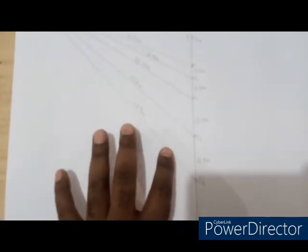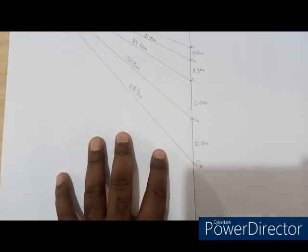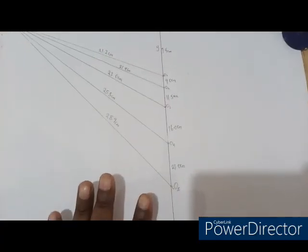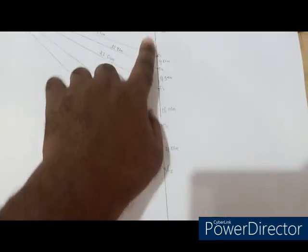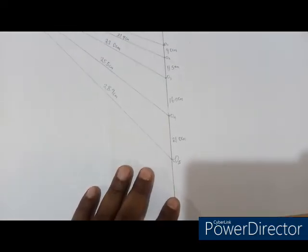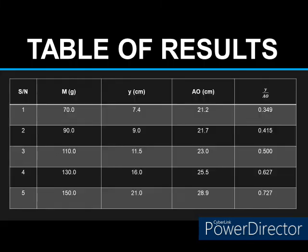Now I'm going to tabulate these readings in a table, and then I would plot a graph of M, which is the known mass, on the vertical axis. And then I'll plot a graph of this Y over AO on the horizontal axis, and then I'll show you more on the theory and how we can be able to deduce the unknown mass.